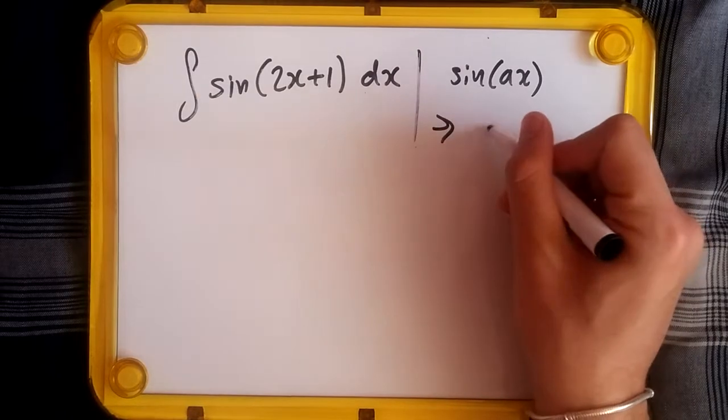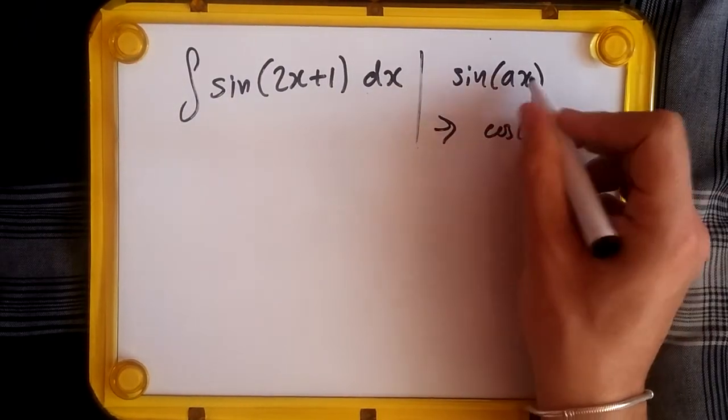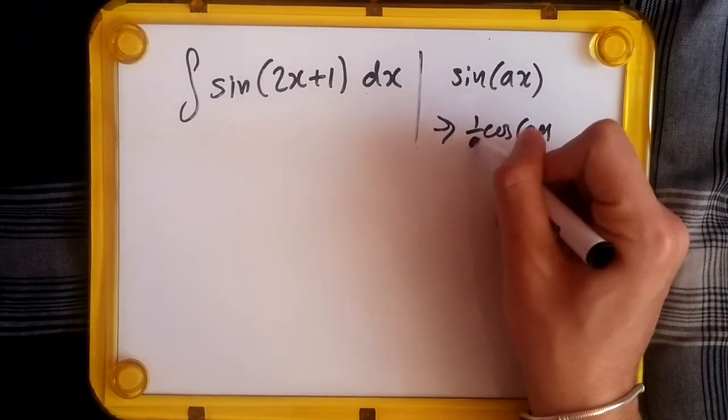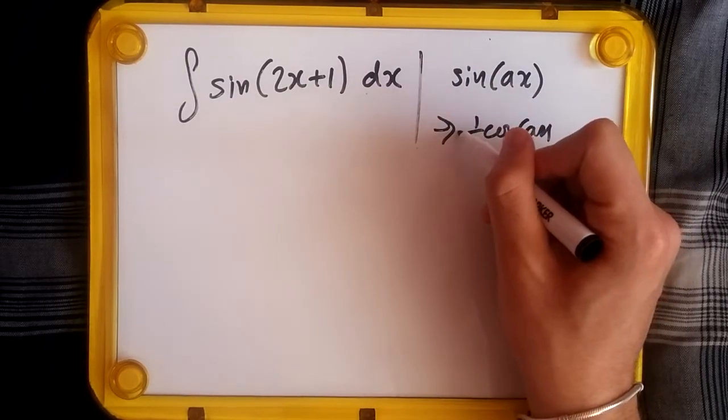And using the chain rule differential inside, we get 1 over a outside, and because you're going from sine to cos, it's a negative.